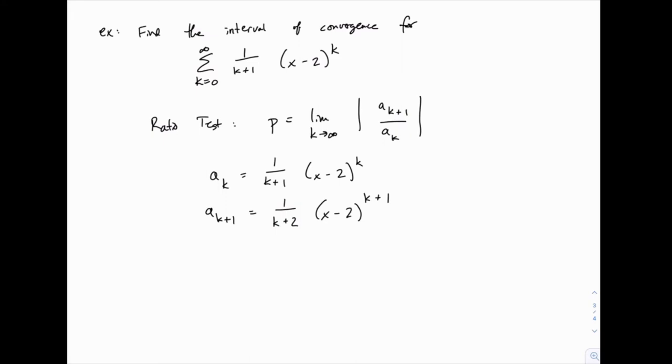Then the value of p will just be the second one divided by the first one. So I'll write it this way, the limit as k goes to infinity, we'll have (x minus 2) to the k plus 1 divided by k plus 2, that's this right here. And then to divide by the other one, rather than writing this big nasty fraction, I'm just going to multiply by the reciprocal. So I'm going to multiply by (k plus 1) divided by (x minus 2) to the k.